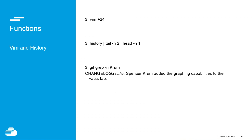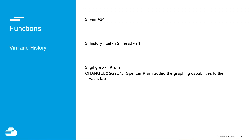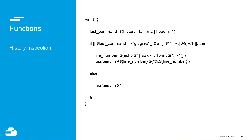This is the number one thing — the fancy thing. If you type 'vim +24 filename', it will open up that file on the 24th line. That second thing will give you the last command you typed. And 'git grep -n' will give you a colon-number-colon format. So I overrode vim, and whenever I type 'vim', it says: was the last command you typed 'git grep'? Did you give me something with colon-line-number-colon? If so, I'll open up that file to the line number that matched your most recent grep.